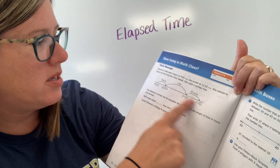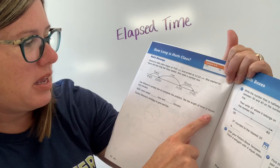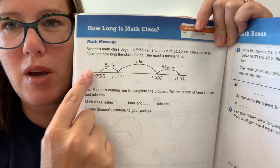She started to figure out how long the class lasted and she used a number line. It says use Sheena's number line to complete the problem below. Tell the length of time in hours and minutes. So I want you to practice this.